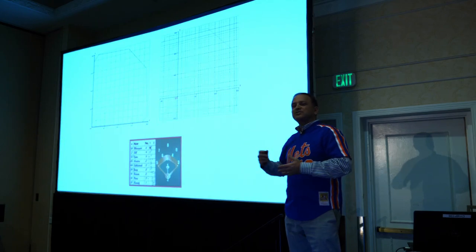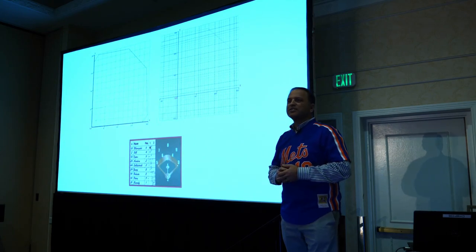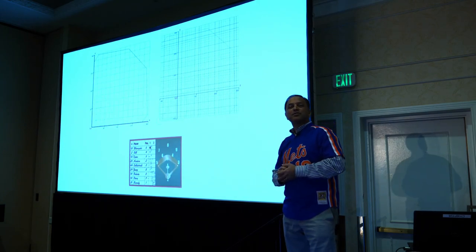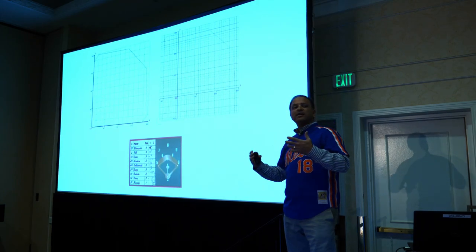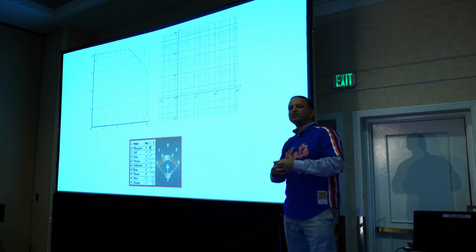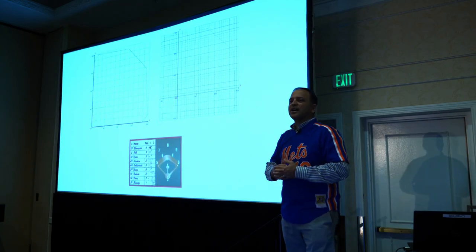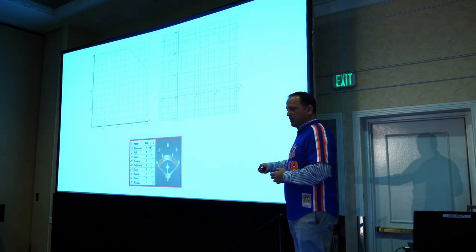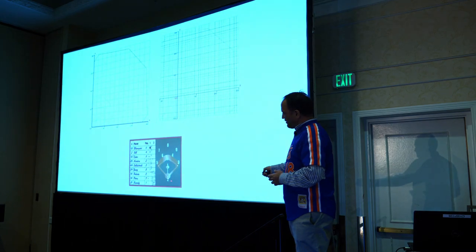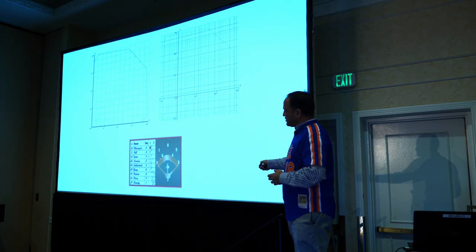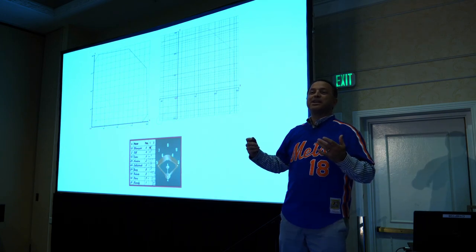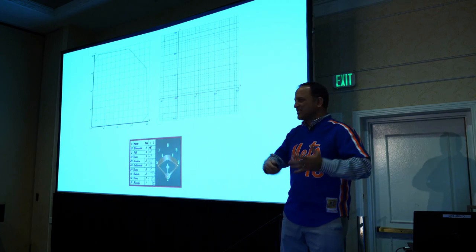It matters a lot where you put the players because their job is to catch the ball before it hits the ground. Students need to know where players stand and how they're referred to. In baseball we have a shorthand: we call players by number. Position one is pitcher, then catcher, first base, second base, third baseman, shortstop, left fielder, center fielder, and right fielder. How many players on the field? Nine.